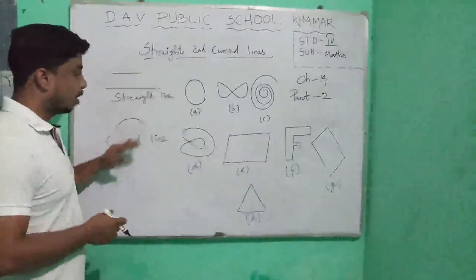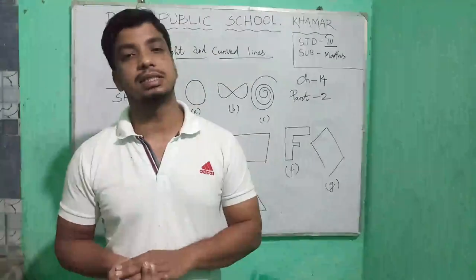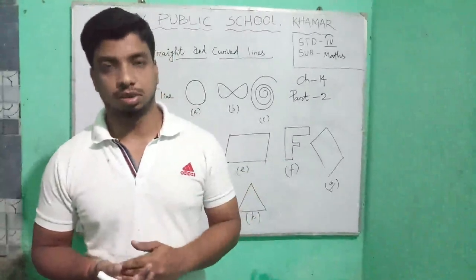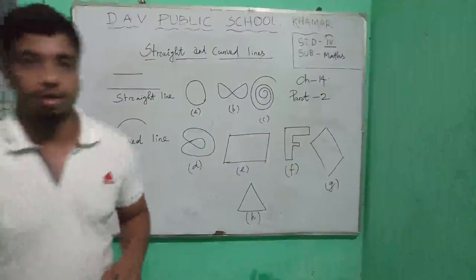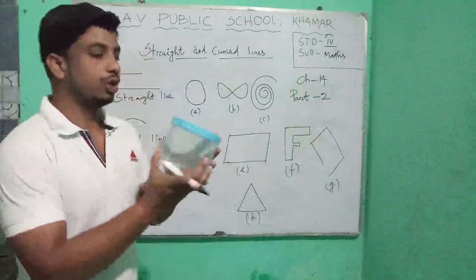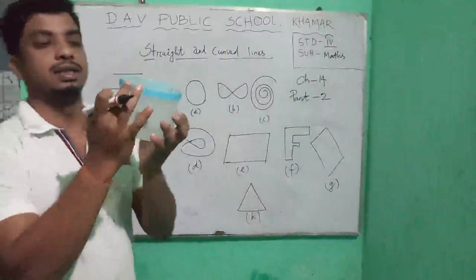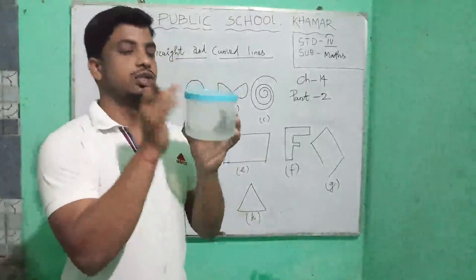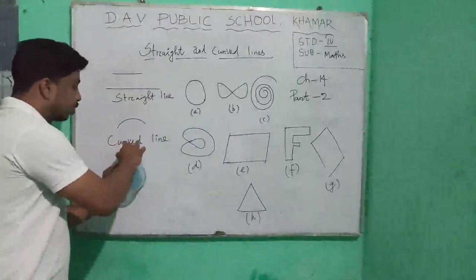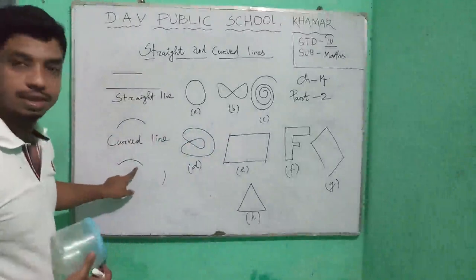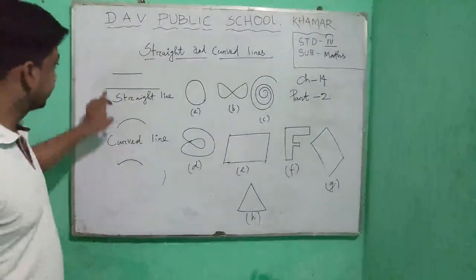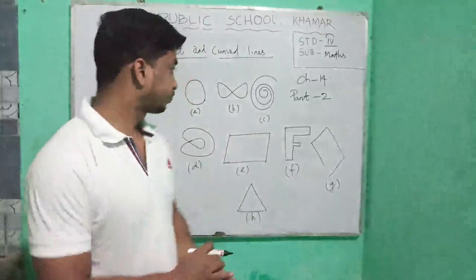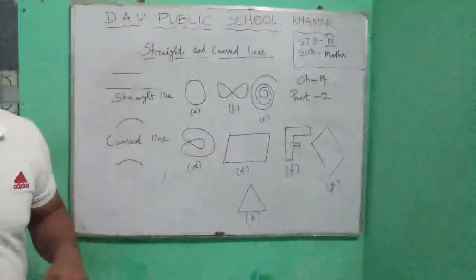Similarly, by moving a pencil along a curved edge — like the edge of a coin — or here I have a box, and here are the edges. If you draw a line against these curved edges, the line will be a curved line. So this is a curved line, and this is a straight line.